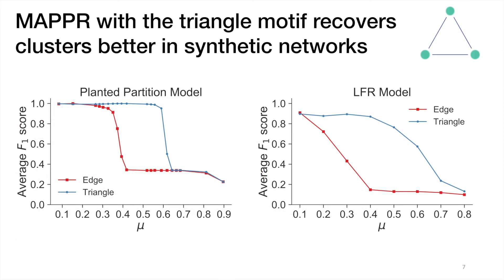To give you a sense of the empirical results, one thing we did was test MAPPR on synthetically generated networks with planted cluster or community structure, such as the planted partition model or the LFR model. What we found is that using the triangle motif with MAPPR is much more effective than purely finding clusters based on edges in terms of recovering this ground truth structure.